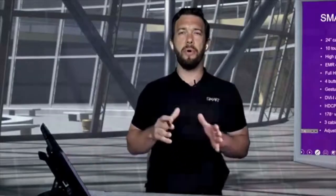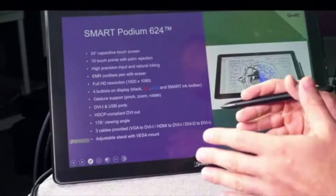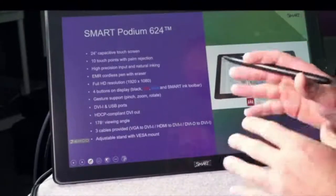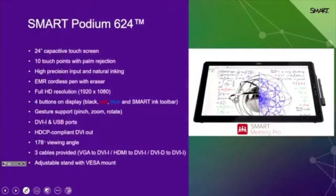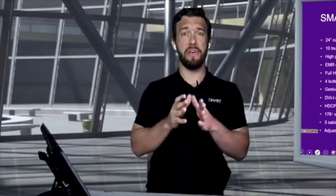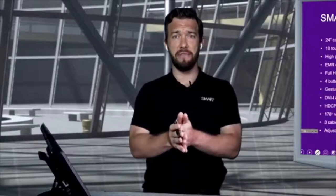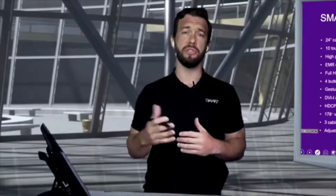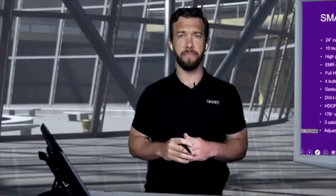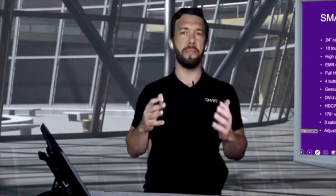The Smart Podium itself is a 24-inch HD display. It comes with projective capacitive touch, which is the most responsive touch on the market, and a pen that can either be wired or wireless. We also have full HD resolution and four buttons to support easy navigation between different pen colors. We have video in directly from your computing source, and video out as well if you wanted to go to a larger projected display or a larger video wall. We'll put the link below so you can access the full specs.